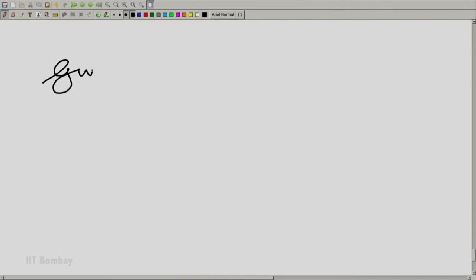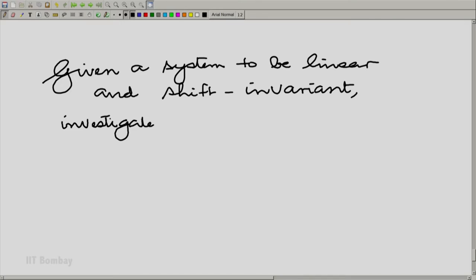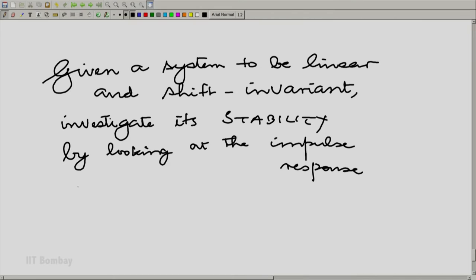Welcome to the 29th session on signals and systems. In this session, we answer a question related to the stability of a linear shift invariant system by looking at its impulse response. Let us frame the question first. Given a system to be linear and shift invariant, investigate its stability by looking at the impulse response and do this for continuous and discrete variable systems.